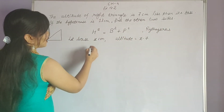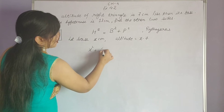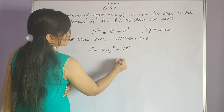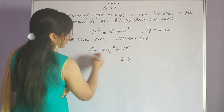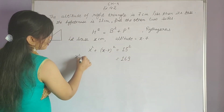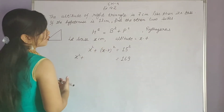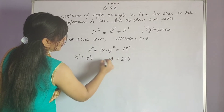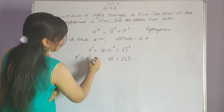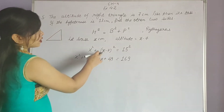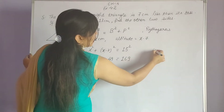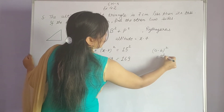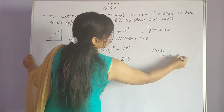You can see: base square plus perpendicular square is equal to hypotenuse square. So 13 squared is 169. Then we have x squared plus (x minus 7) whole squared. We open the whole square using the identity: (A minus B) whole squared equals A squared plus B squared minus 2AB.